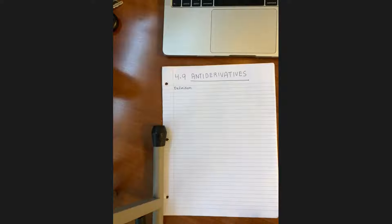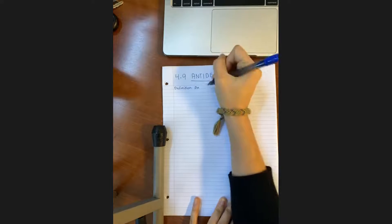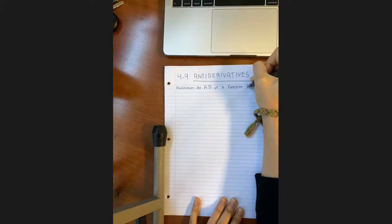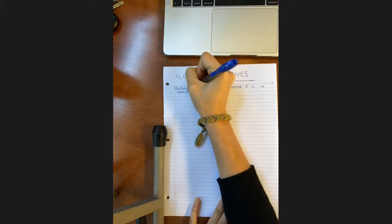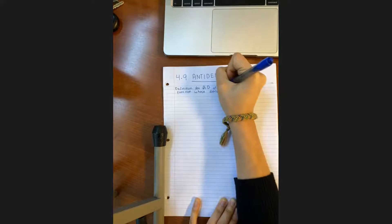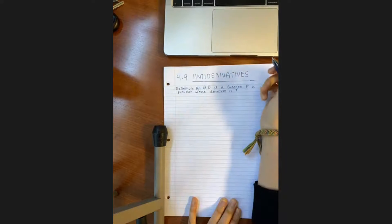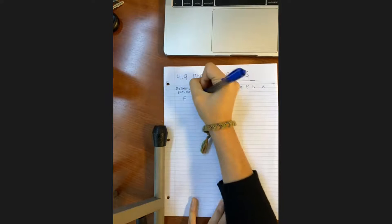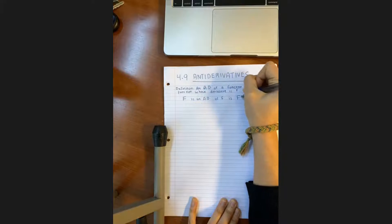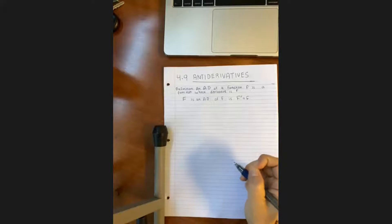Hi, today I'm going to be teaching you guys about anti-derivatives. The definition of an anti-derivative — which I'm going to abbreviate as AD — is that an AD of a function f is a function whose derivative is f. Basically, we signify anti-derivatives with capital letters. So the anti-derivative F is an AD of f if the derivative of F is equal to f. The way anti-derivatives work is by reversing the power rule, so you have to think about this backwards.